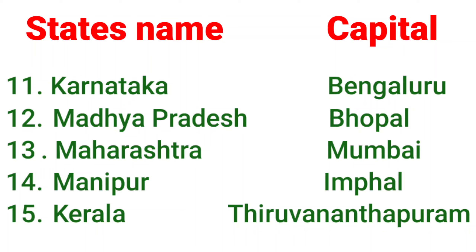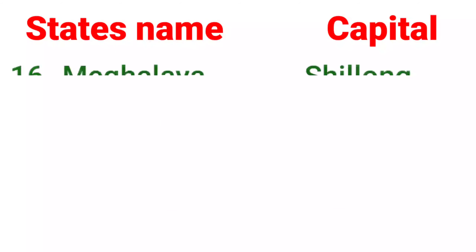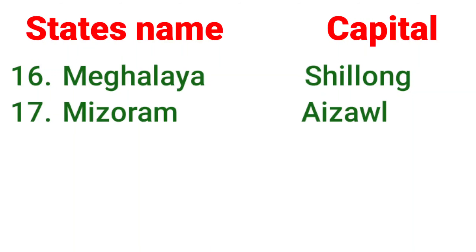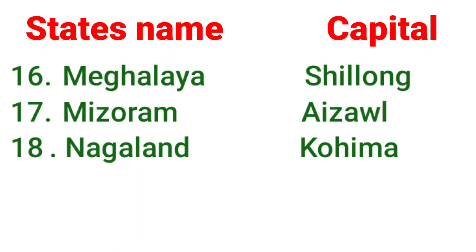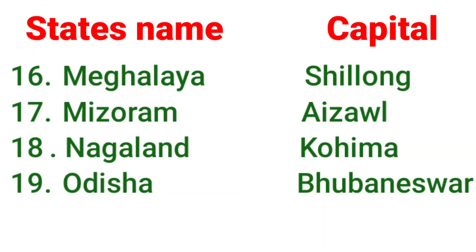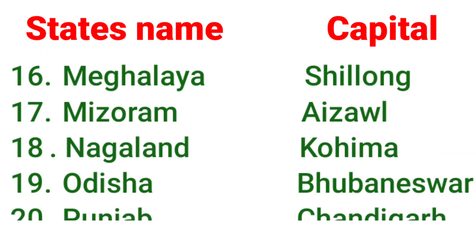Manipur's capital is Imphal. Kerala's capital is Thiruvananthapuram. Next state is Meghalaya. Meghalaya's capital is Shillong. Mizoram's capital is Aizawl.